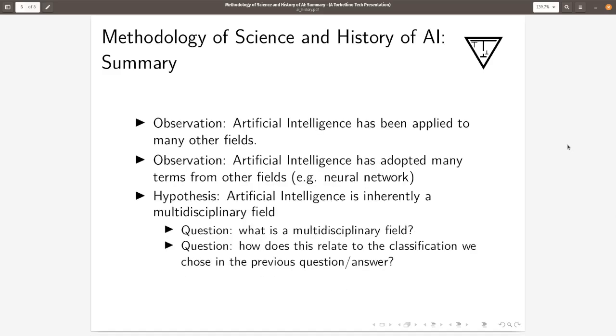So we observe that artificial intelligence has been applied to many other fields. Artificial intelligence has adopted many terms from other fields like neural network. And a hypothesis is artificial intelligence is inherently a multidisciplinary field. This has been said. The question is then what is a multidisciplinary field and how does this relate to the classification we chose in the previous question?